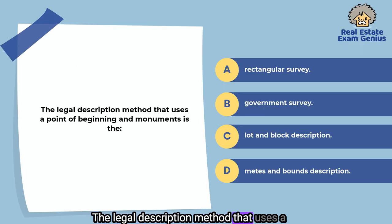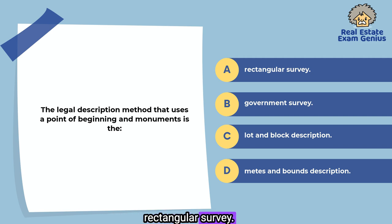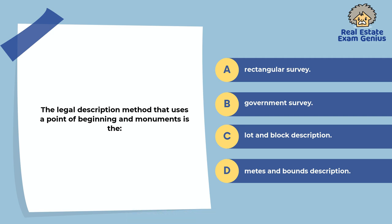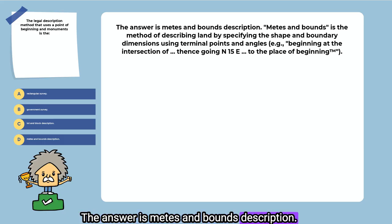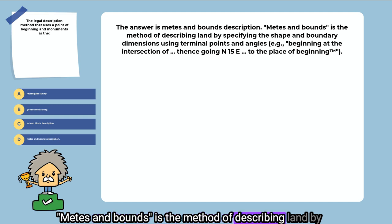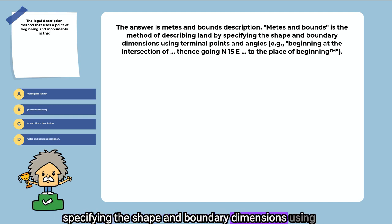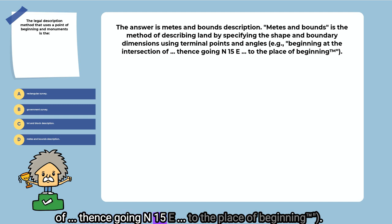The legal description method that uses a point of beginning and monuments is the: rectangular survey, government survey, lot and block description, or metes and bounds description. The answer is metes and bounds description. Metes and bounds is the method of describing land by specifying the shape and boundary dimensions using terminal points and angles.